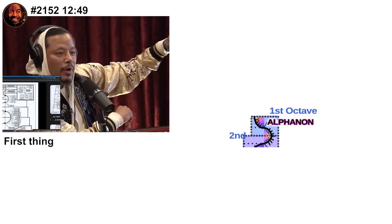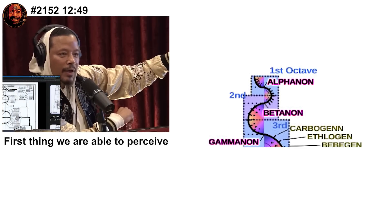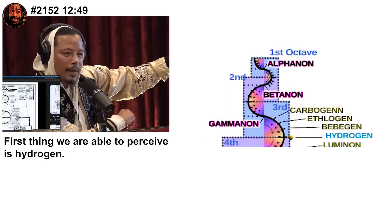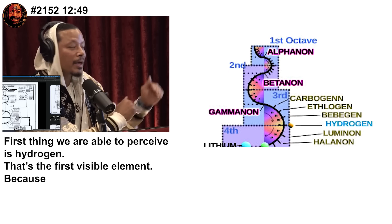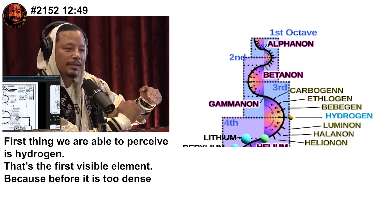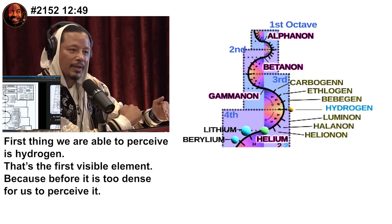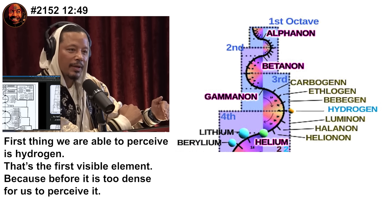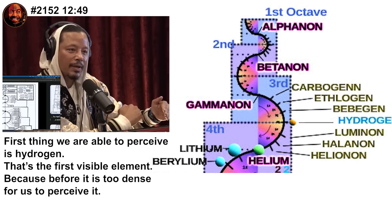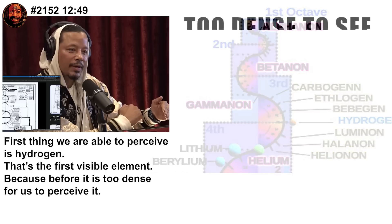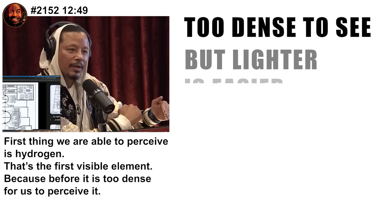According to Russell's chart, the first thing we are able to perceive is hydrogen — it's the first visible element, because before it things are too dense for us to perceive. Can't perceive it? What's the point of all these invisible elements? If you can't detect a phenomenon, it has no business in science. How do you know it's too dense if you can't perceive it? Without measurement, there is no science.